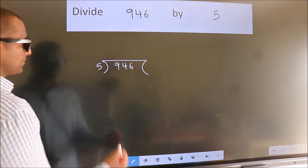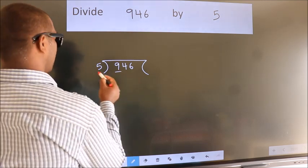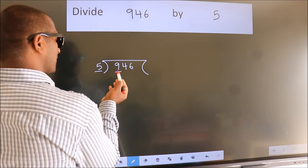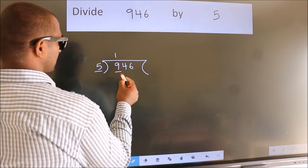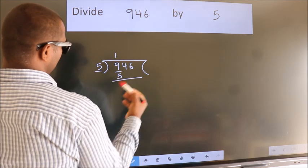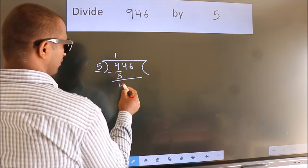Next. Here we have 9, here 5. A number close to 9 in 5 table is 5 once 5. Now we should subtract. We get 4.